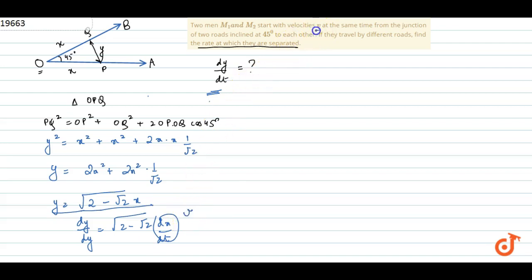The question says they are traveling at velocity V, so that means dy by dt will be root 2 minus root 2 into V.